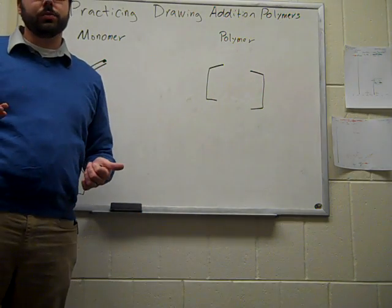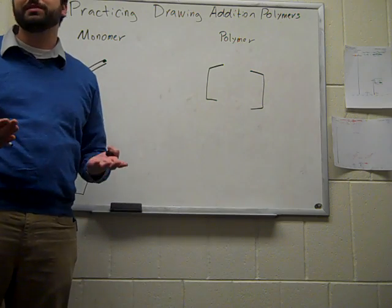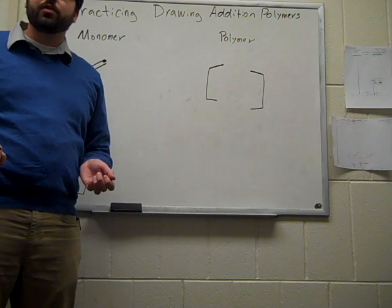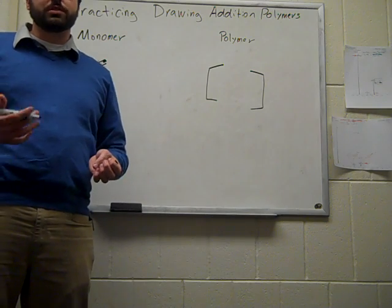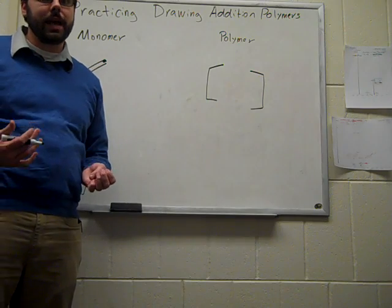polymers are really big molecules, and so it's not really possible for us to draw all of the carbons, hydrogens, and heteroatoms of the entire molecule. Rather, what we're going to do is we're going to draw a small segment of this molecule and indicate that it repeats again and again.